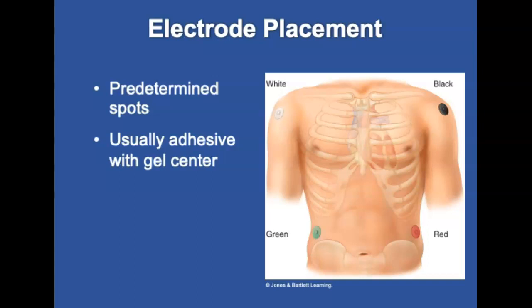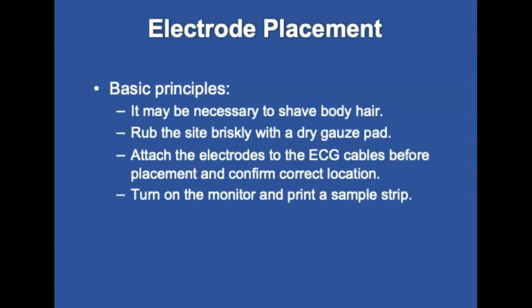Electrodes in the pre-hospital setting are usually adhesive with a gel center for better skin contact, and some have a diaphoretic electrode to better stick to patients who are sweating. Basic principles should be followed for best skin contact and to minimize artifact. It may be necessary to shave the patient's body hair at the electrode site, and to remove oil and dead tissue, rub the site briskly with a dry gauze pad. Attach electrodes to the ECG cables before placement, confirm the correct electrode is at the correct location, then turn on the monitor and print a rhythm strip to check for artifact. To properly perform a cardiac monitor, refer to skill drill 17-1.